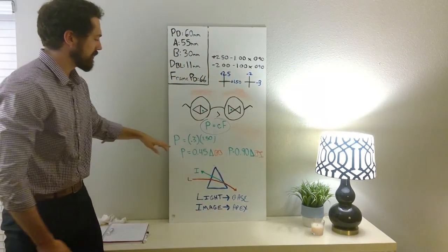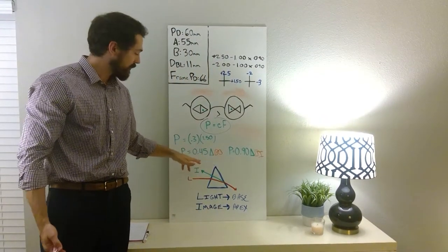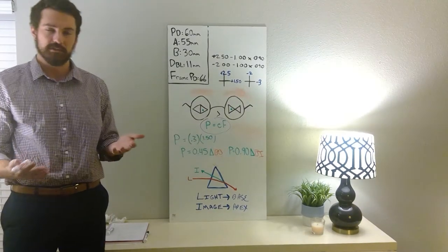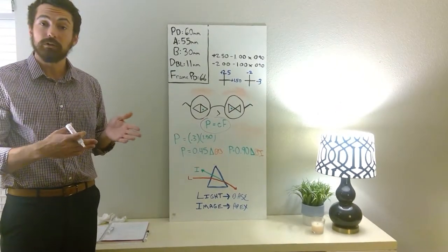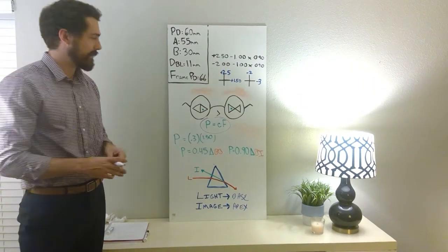So last part of these questions: to find the total prismatic demand, are you adding these two values together or are you subtracting? So let's think back to the beginning here. The front of the eye is going to rotate towards where? The image, the apex, right?